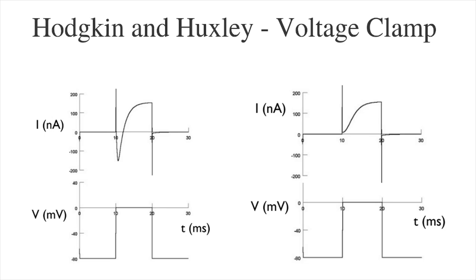First, they set the voltage to minus 80 millivolts, changed it to 0 millivolts, and then back to minus 80 millivolts. What they discovered is a negative current that entered from outside the cell to the inside of the cell, accompanied by a positive ion current from the inside of the cell to the outside of the cell. After that, it became clear to them that the negative current is a current of sodium ions, and the positive current is a current of potassium ions.